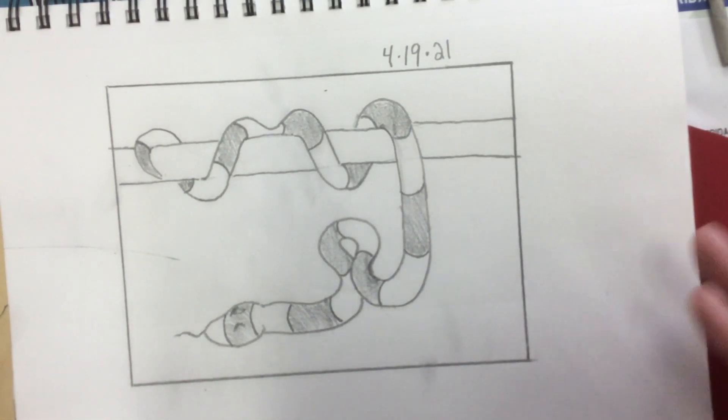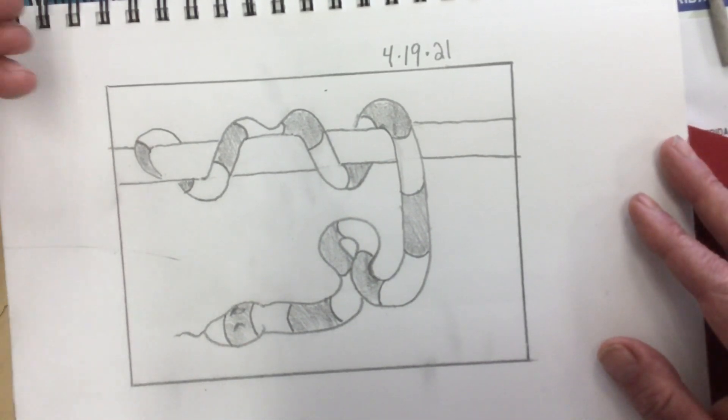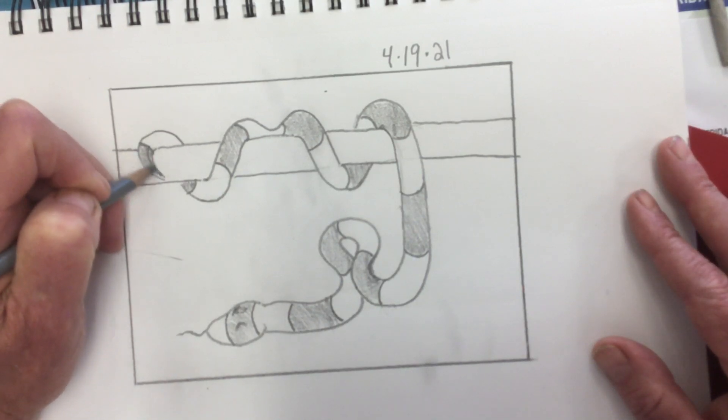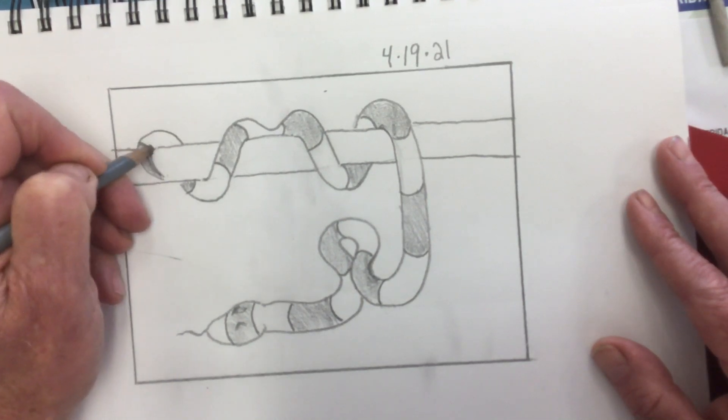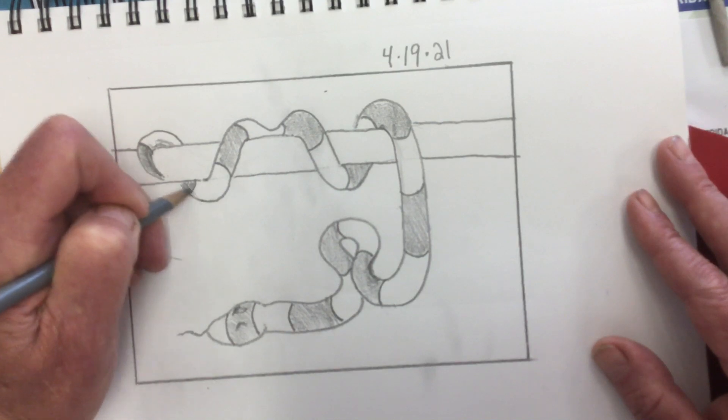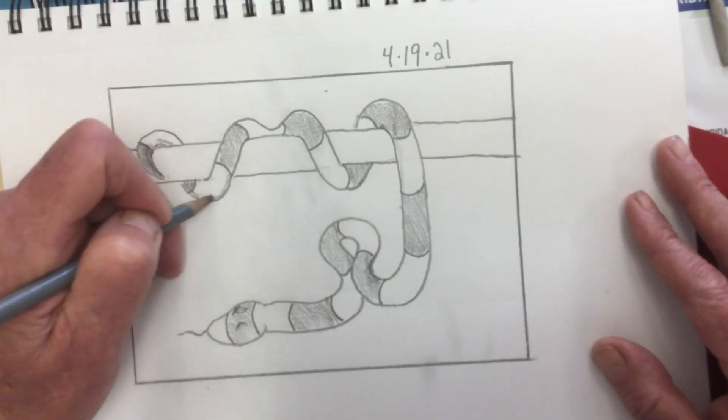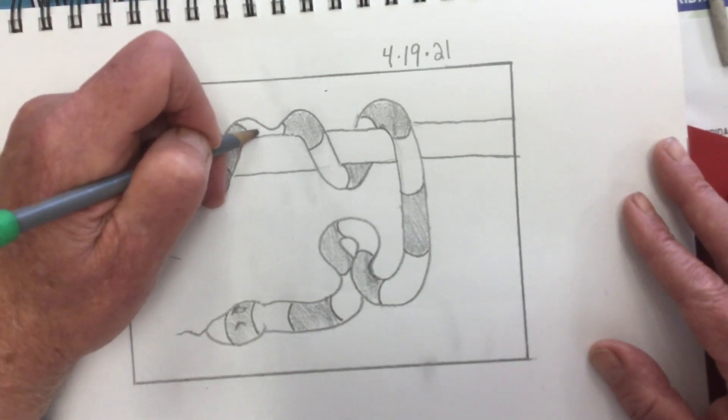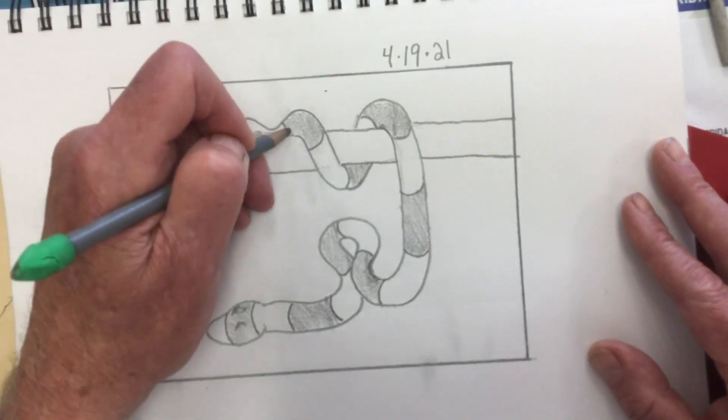So now we want to put some shading on it. So if my light source is above, that means we'll get a form shadow. Even where it's white, you're still going to get a form shadow. And we'll use a blender to smooth this out a little bit.